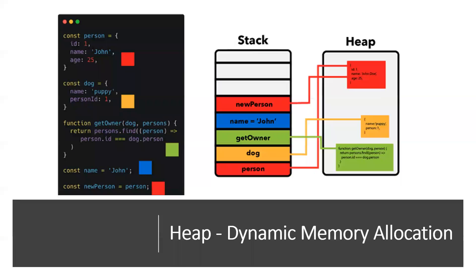The second type of storage is the heap. Objects, functions, and arrays all use dynamic allocation of memory — their sizes cannot be determined at compile time. At runtime we can determine the size of these objects, arrays, and functions. Heap is a large pool of memory.